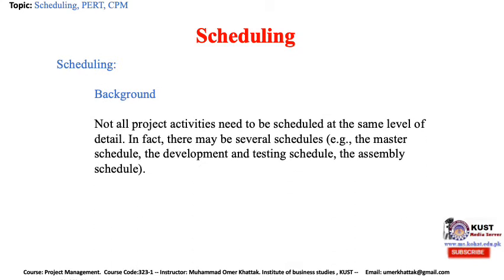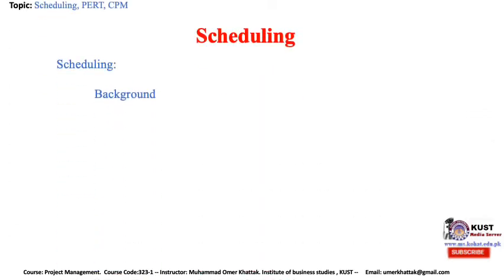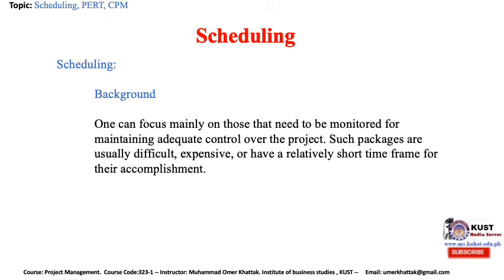Not all project activities need to be scheduled at the same level of detail. In fact, there may be several schedules — for example, the master schedule, the development and testing schedule, and the assembly schedule. These schedules are typically based on the previously determined action plan and work breakdown structure. It is good practice to create a schedule for each major task level in the WBS that will cover the work packages. One can focus mainly on those that need to be monitored for maintaining adequate control over the project. Such packages are usually difficult, expensive, or have a relatively short time frame for their accomplishment.